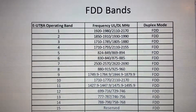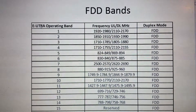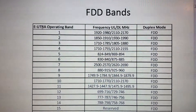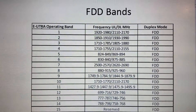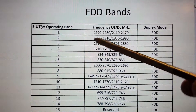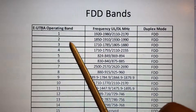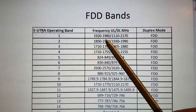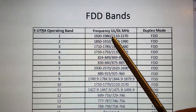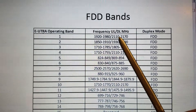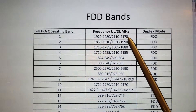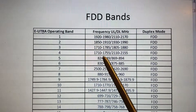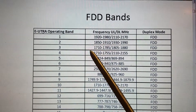Hello friends, today I'm going to tell you the FDD bands used in LTE communication system. So let's start one by one. The first one: 1920 to 1980 megahertz and 2110 to 2170 megahertz, used for FDD communication.